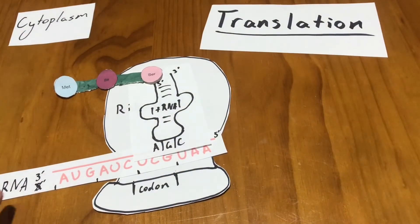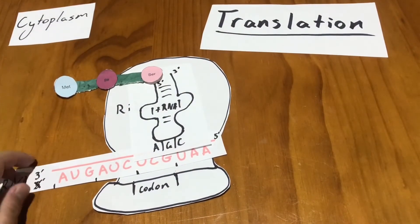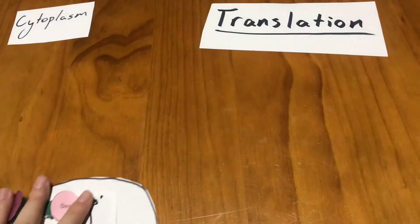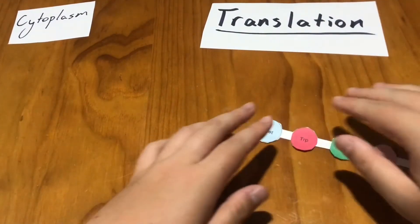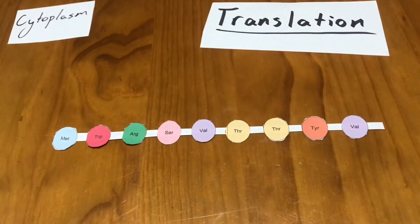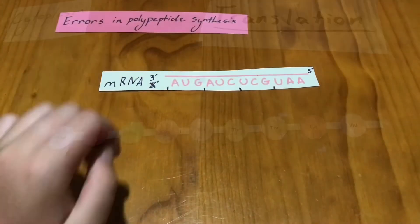The mRNA will shift through the ribosome so the next tRNA molecule can come in. The amino acid chain becomes longer until a stop codon is reached. Once the stop codon is read, the amino acid chain detaches and a polypeptide is formed.